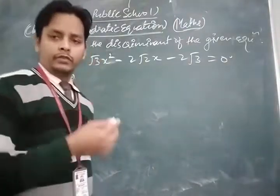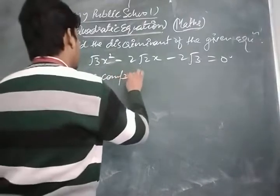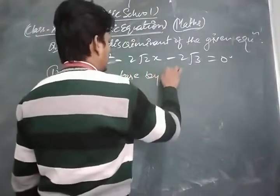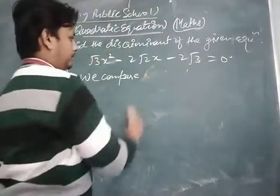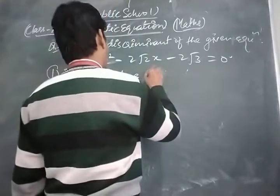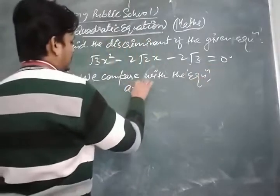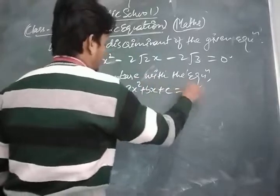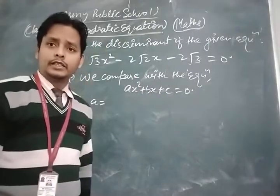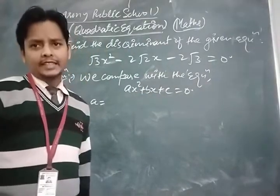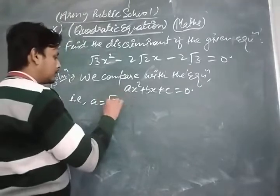In order to find the discriminant, first we find the values of a, b, and c by comparing with the standard equation ax² + bx + c = 0. The value of a is the coefficient of x², which is √3. So a = √3.